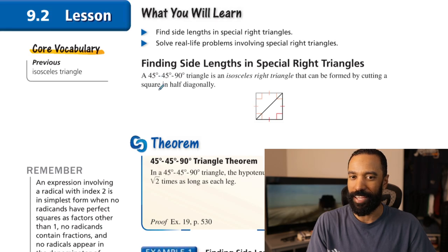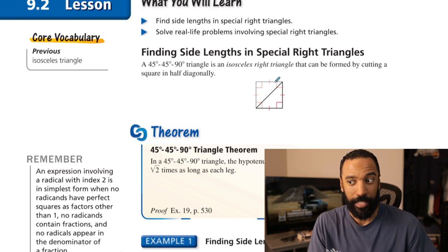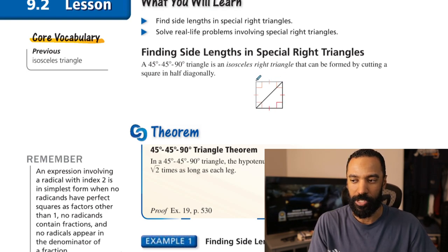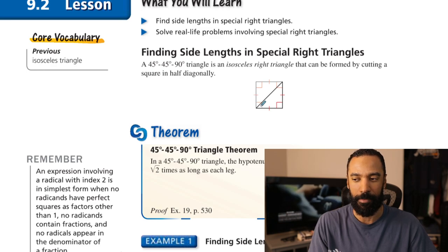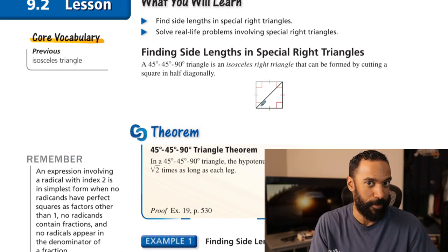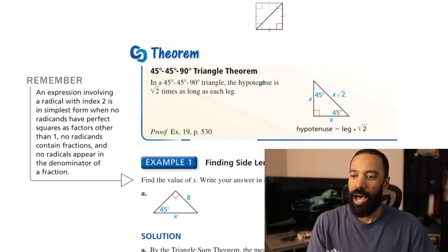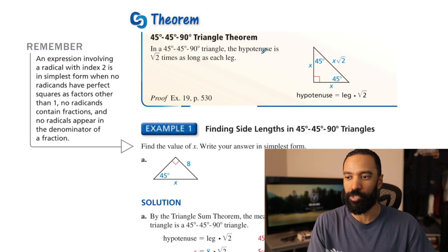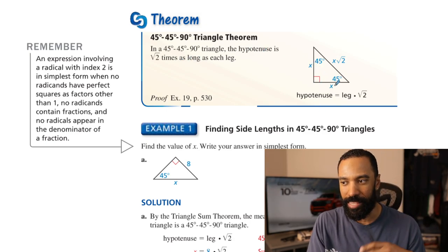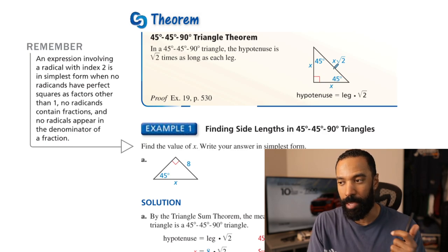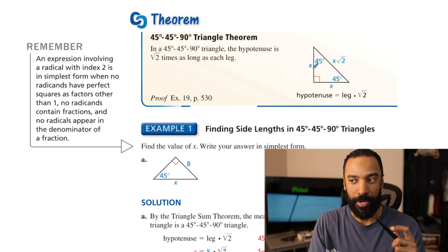A 45-45-90 triangle is an isosceles right triangle that can be formed by cutting a square in half diagonally. You take a square, which has all equal sides and right angles all around, and cut it in half. Those 90-degree angles get bisected — because the square's diagonals bisect their angles — to 45s. In a 45-45-90 triangle, the hypotenuse is root 2 times as long as each leg. Pretty simple Pythagorean theorem setup.